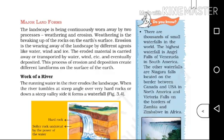Work of a river. The running water in the river erodes the landscape. When the river falls at a steep angle over a very hard rock or down a steep valley side, it forms a waterfall.